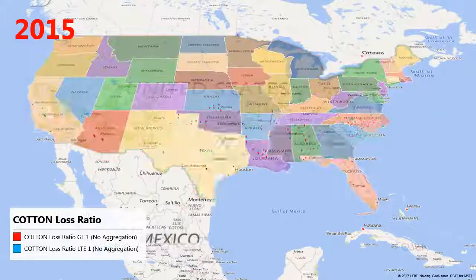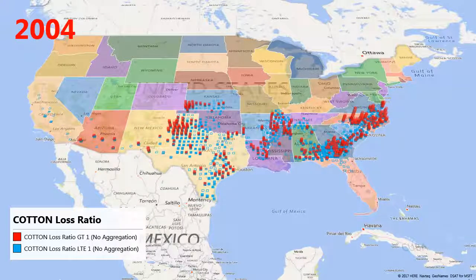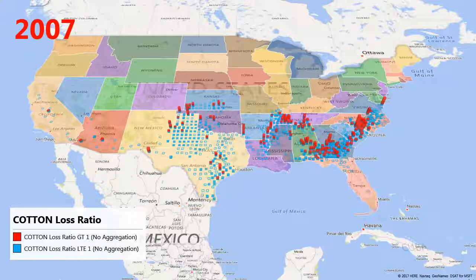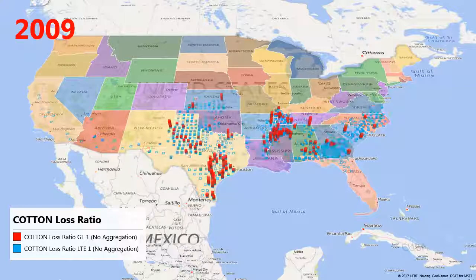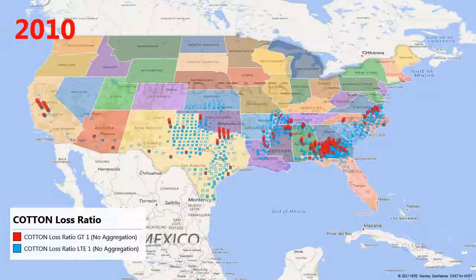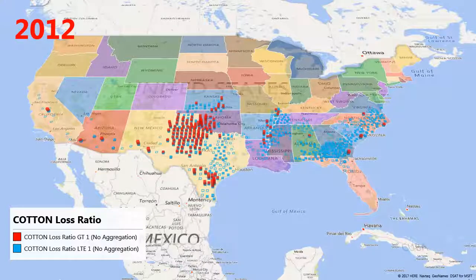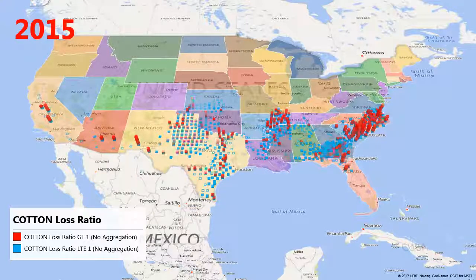In this scene, cotton loss ratios for each county from 2001 to 2015 are shown. The red portion of the column denotes that the loss ratio exceeded one for a given year. Over the 15-year study period, the year with the lowest percentage of counties with loss ratios greater than one was 8% in 2005. In 2008, 45% of all counties with cotton revenue crop insurance had loss ratios that exceeded one.